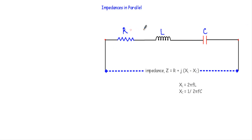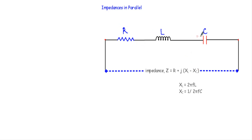Between the two points there could be resistance, inductance, capacitance, or a combination. If we have only a resistor, XL and XC are zero. If we have only an inductor, R and XC are zero. If we have only a capacitor, R and XL are zero. If we have a resistor and inductor, XC is zero. If we have a resistor and capacitor, XL is zero.